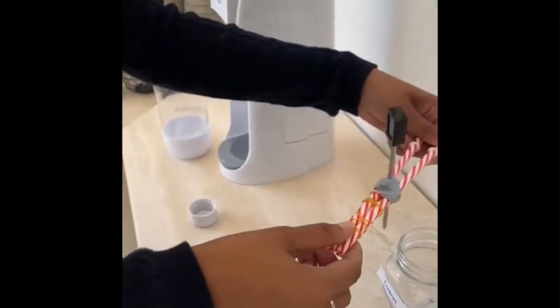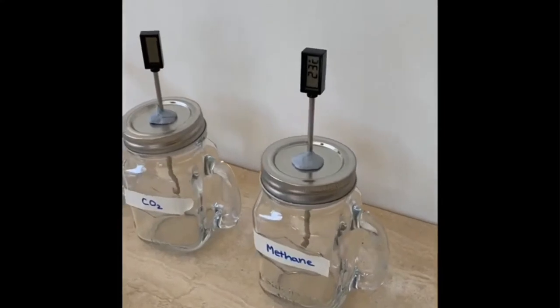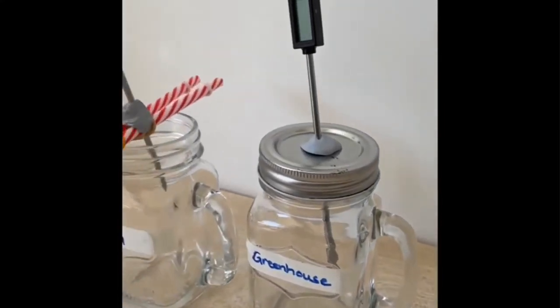For the control, using the straws or bamboo stick and securing with blue tack and the rubber band, place the thermometer on top as shown here.